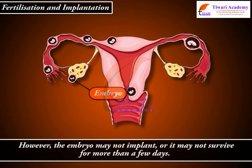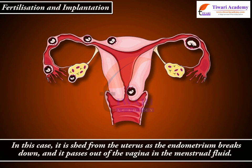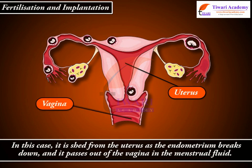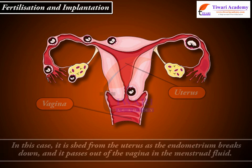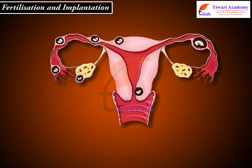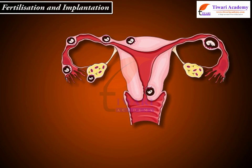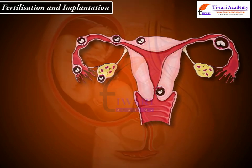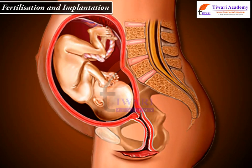However, the embryo may not implant or it may not survive for more than a few days. In this case, it is shed from the uterus as the endometrium breaks down and it passes out of the vagina in the menstrual fluid. The loss of a very early pregnancy in this way is very common and the woman does not even know that she was momentarily pregnant.